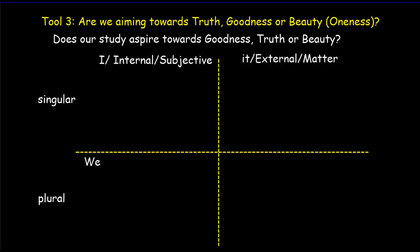So if we're here in the it quadrant and we're dealing with matter, that's basically science stuff. So you're over here. Then what is it we hope to find out about matter? We hope to find out the truth about matter when we're dealing with matter. It's truth that kind of takes over. We want to know the scientific theories.